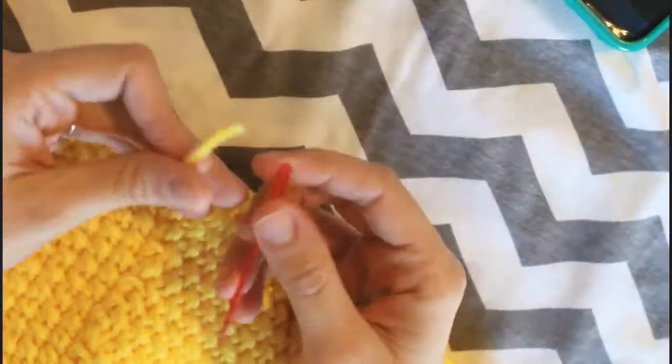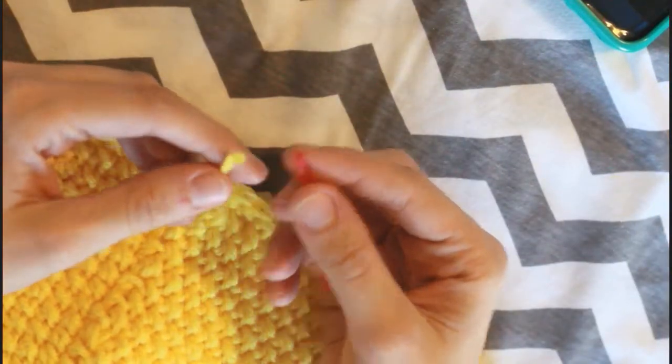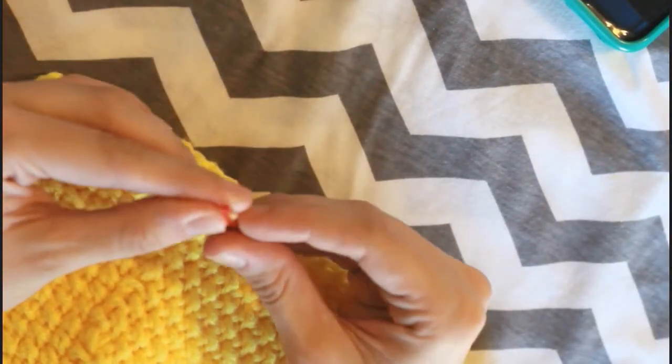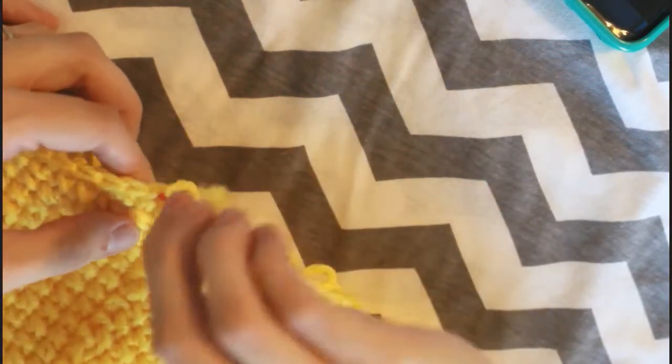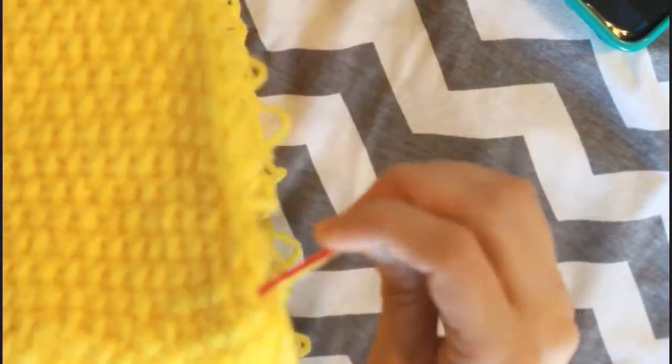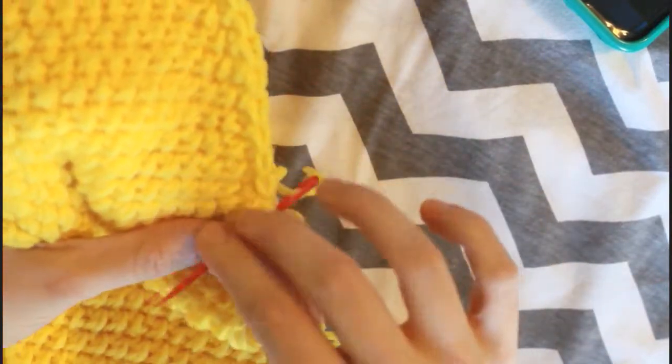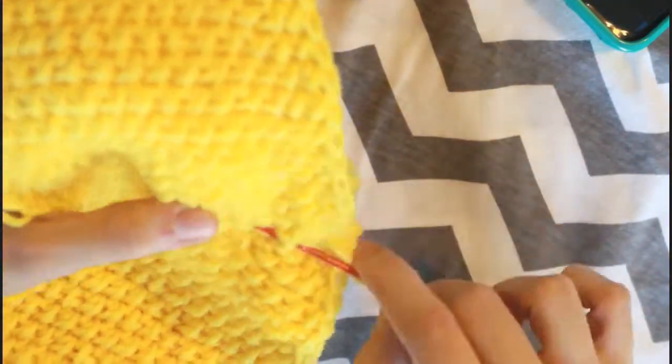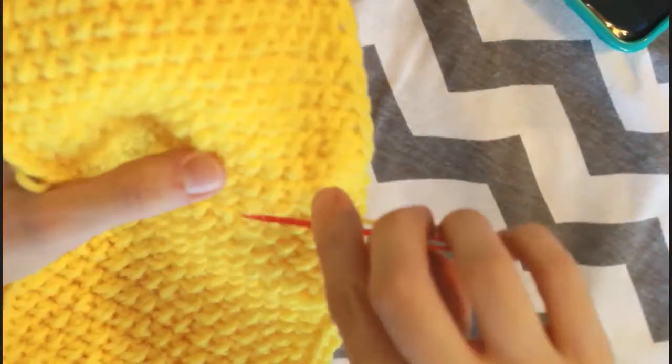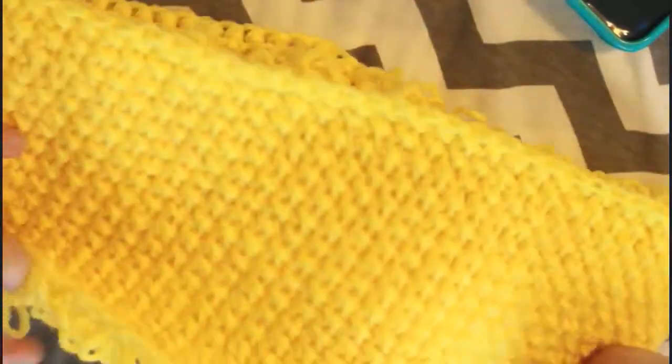But before we turn it inside out, we're gonna get a yarn needle, and we're gonna weave in our ends to have a clean work and not have that little piece of yarn hanging around. Do the same with the tail on the other side when we started.